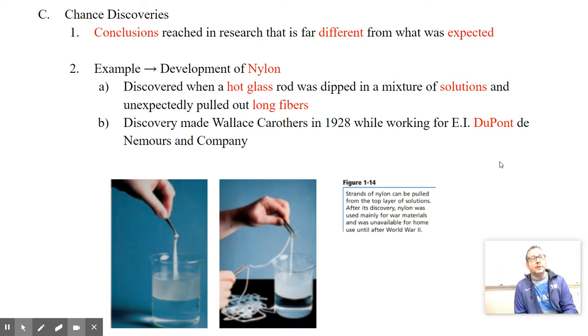Chance discoveries are conclusions reached in research that is far different than what we expected. The development of nylon, again, it was kind of an accidental discovery or a chance discovery. Nylon was discovered when hot glass rods were dipped into a mixture of solutions and unexpectedly pulled out these long fibers. This was discovered in 1928 by Wallace Carruthers, while working for EI DuPont, the Nemours and Company, otherwise really known today as DuPont.